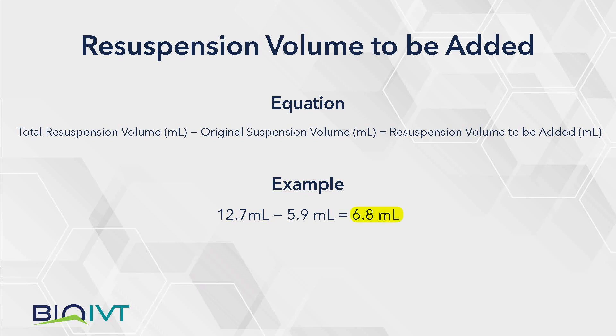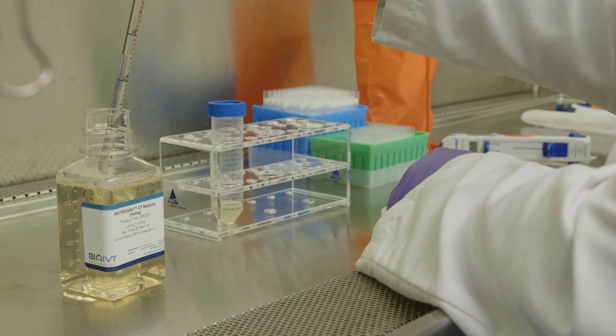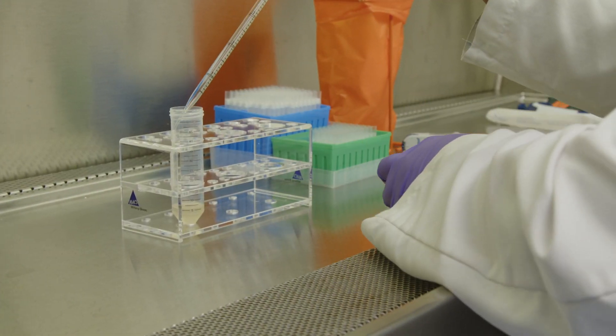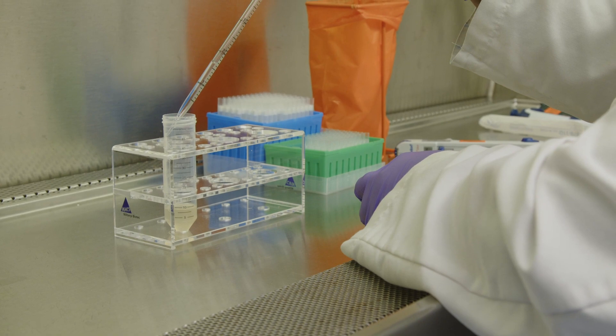Therefore, 6.8 milliliters of in vitro grow CP must be added to bring the total volume to 12.7 milliliters. With the medium added, the final cell concentration will now be at 0.7 times 10 to the sixth cells per milliliter.